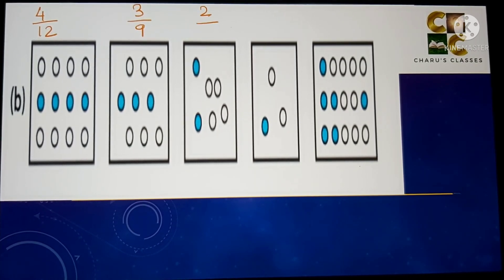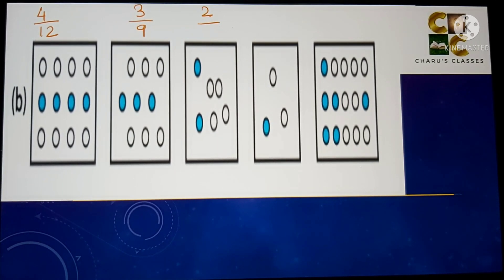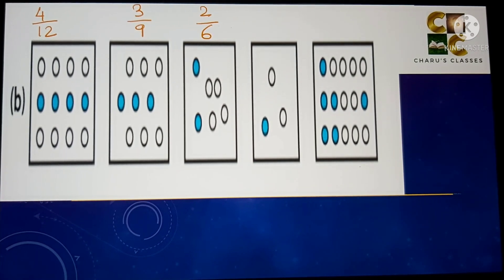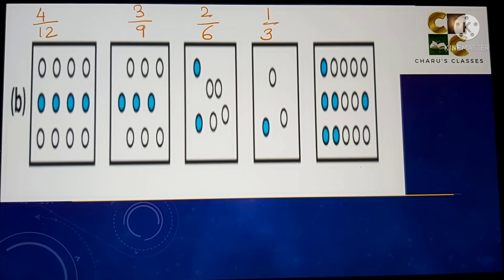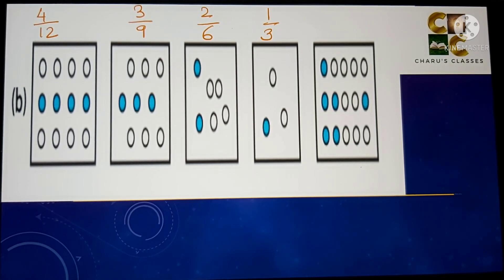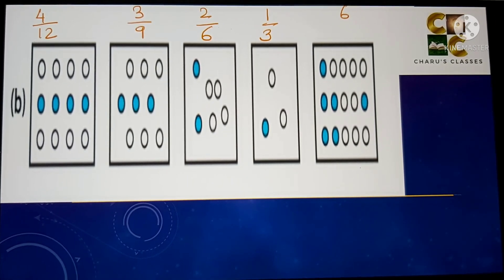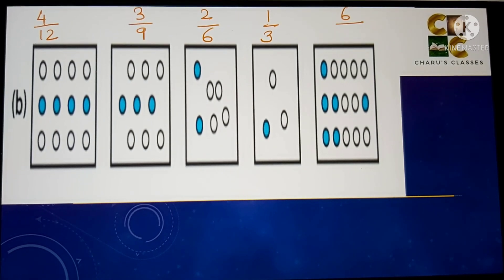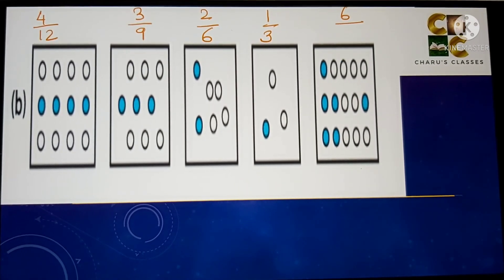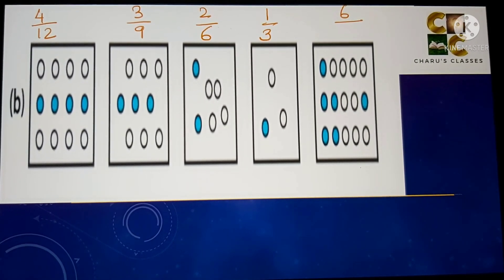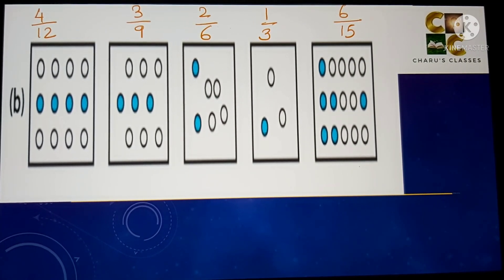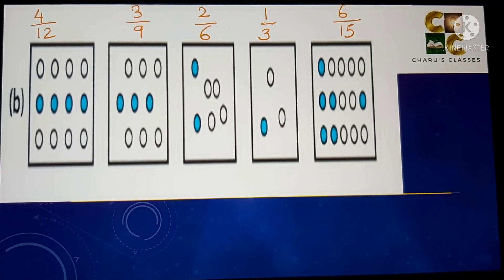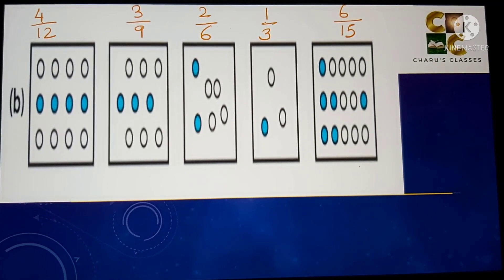Next fraction: 2 shaded parts out of a total of 6. Then 1 shaded out of 3. The next one has 6 shaded circles out of a total of 15 circles, giving us 6 by 15. We have now written all the fractions and need to check whether all of them are equivalent.